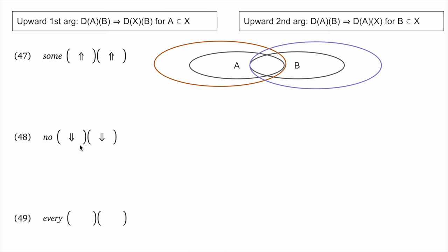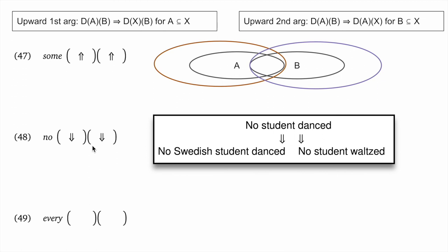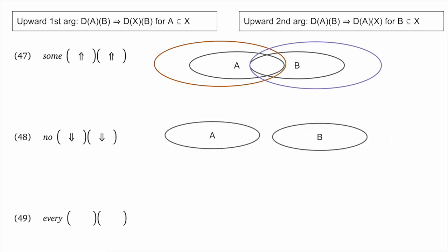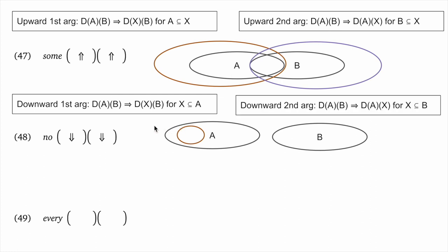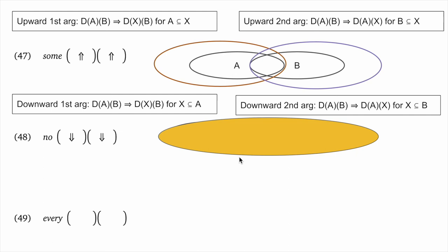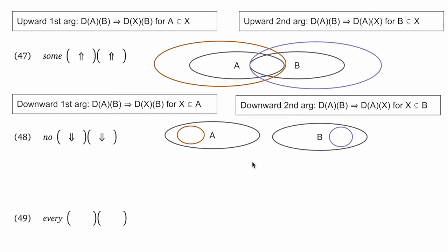No is downward monotone on both its arguments. 'No student danced' entails 'no Swedish student danced,' and 'no student danced' entails 'no student waltzed.' No asserts that A and B have an empty intersection. Going to subsets of A and B will preserve truth — if confined inside A, we can't end up overlapping with B. Upward monotonicity fails for no: if we choose any superset of A, we could pick one that contained both A and B, creating overlap in the intersection and changing the truth value.